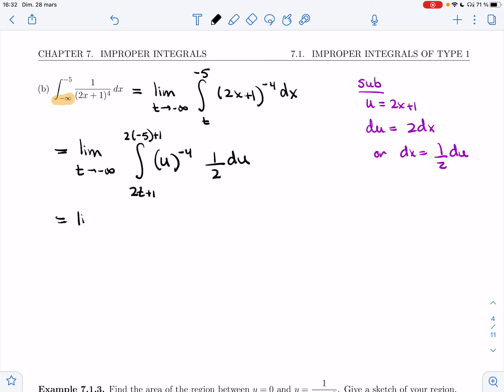I have u to the minus 4, so plus 1 minus 3 over minus 3 times 1 half. And then 2t plus 1, the other bound is minus 10 plus 1, that's minus 9.